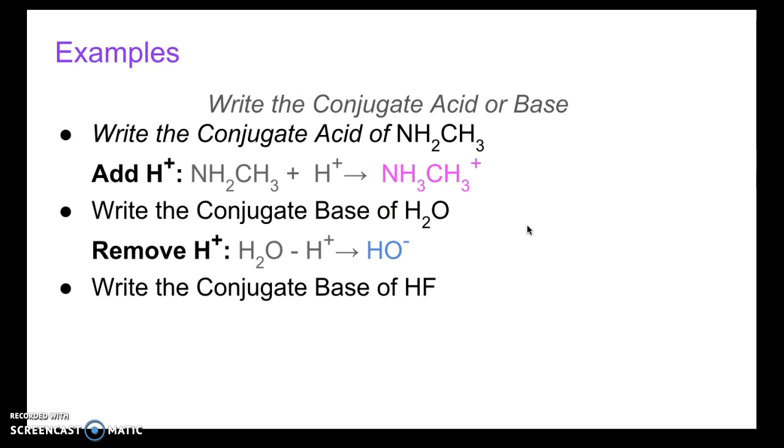If we were asked to write the conjugate base of HF, it's going to be the same thing. We're going to remove H plus. And so we have HF, which is an acid. We subtract H plus. We get rid of the hydrogen. There was only one there. So we get rid of that. And then again, we're subtracting a positive charge. So that gives us a negative charge.